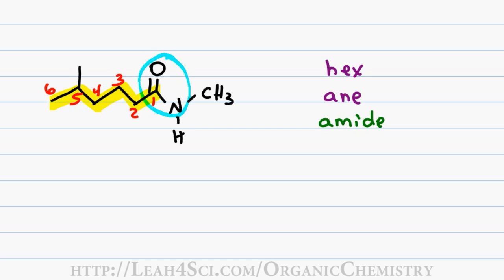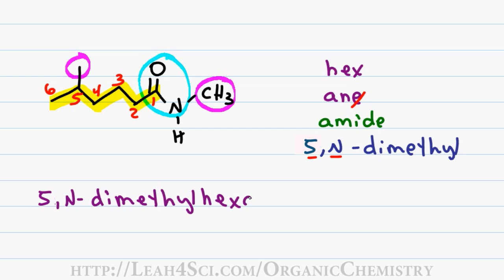I have two methyl substituents, one coming off the nitrogen and one coming off the carbon chain. And so I include the prefix 5,N-dimethyl. This is to show that I have one methyl group on the parent chain and one methyl group on the amide substituent. The numbers always precede letters and that's why you have the 5 followed by the N. You drop the e in an for a final name of 5,N-dimethylhexanamide.